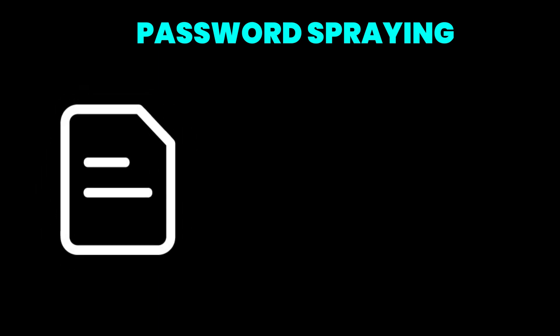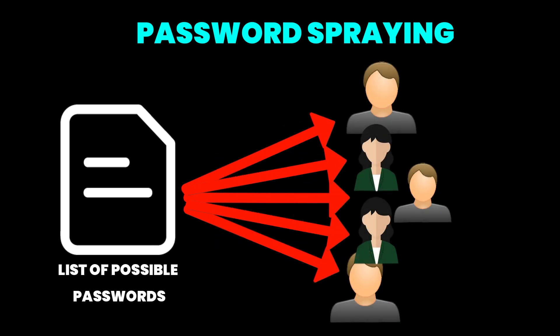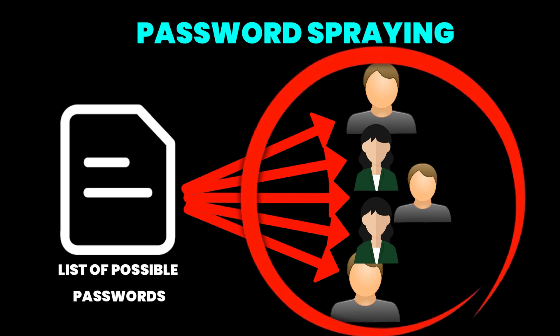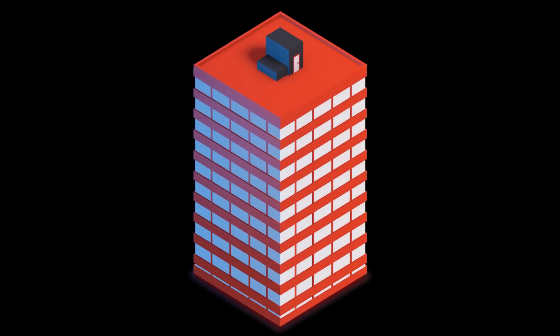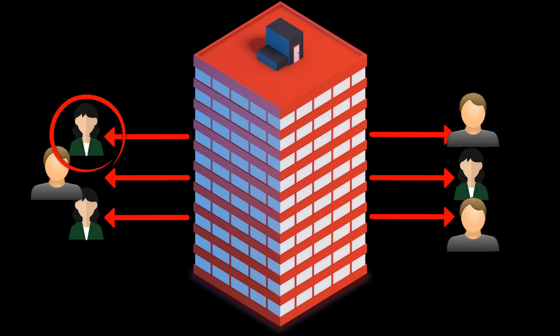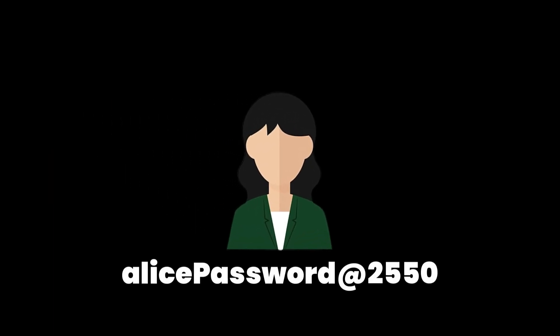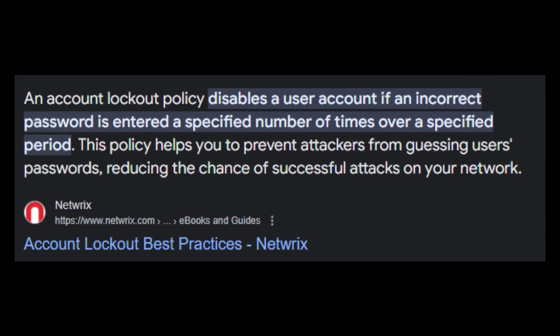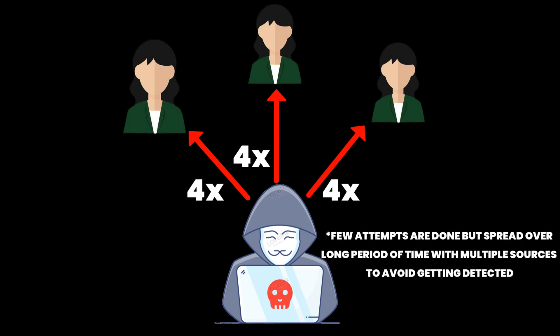Password spraying is an attack where the attacker uses a single word list with commonly used passwords against a large number of accounts. This attack is similar to brute force but more effective because instead of targeting each account individually, they are trying many accounts at once within an equal amount of time. This is usually performed when a hacker wants to get into an organization. It avoids triggering automated account lockout mechanisms because the attacker makes only a few attempts per account, reducing the risk of detection.